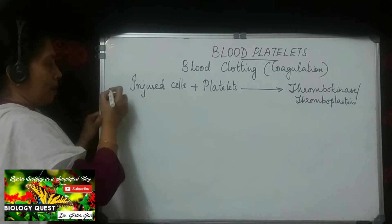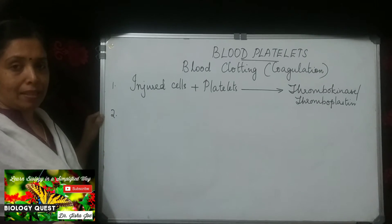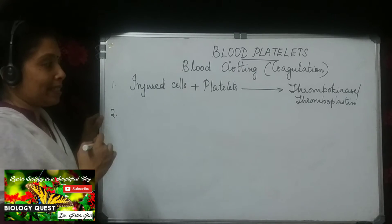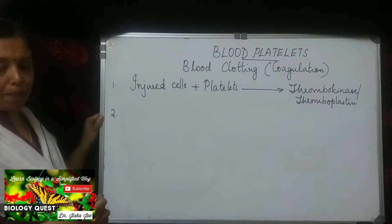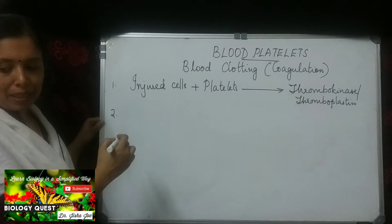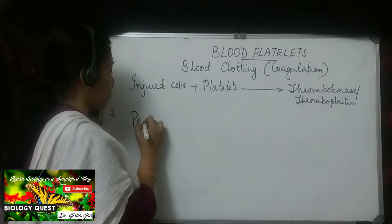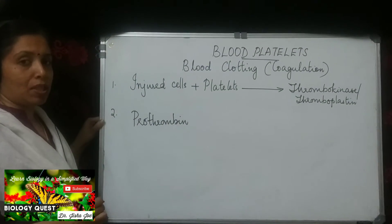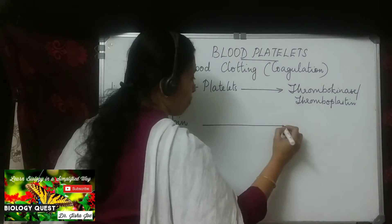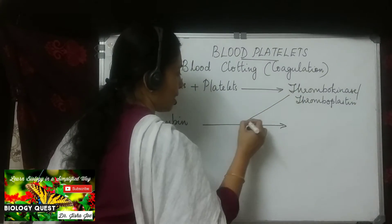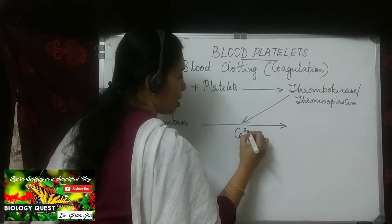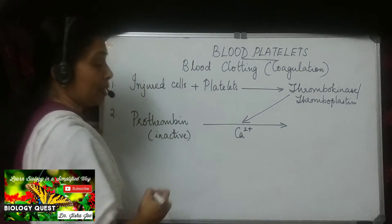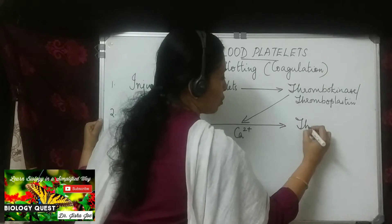Thrombokinase is also called the factor X or Stuart factor. This is the first step. In the second step, thrombokinase will act as an enzyme and catalyze the next reaction. Prothrombin is an inactive substance present in blood, and this thrombokinase, acting as an enzyme in the presence of calcium ions, converts inactive prothrombin into active thrombin.